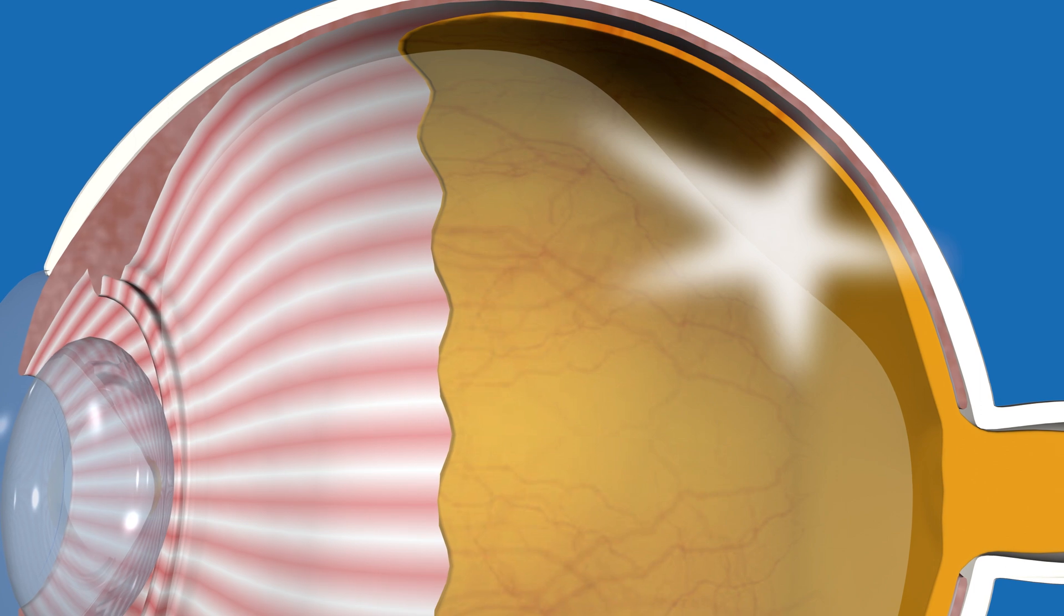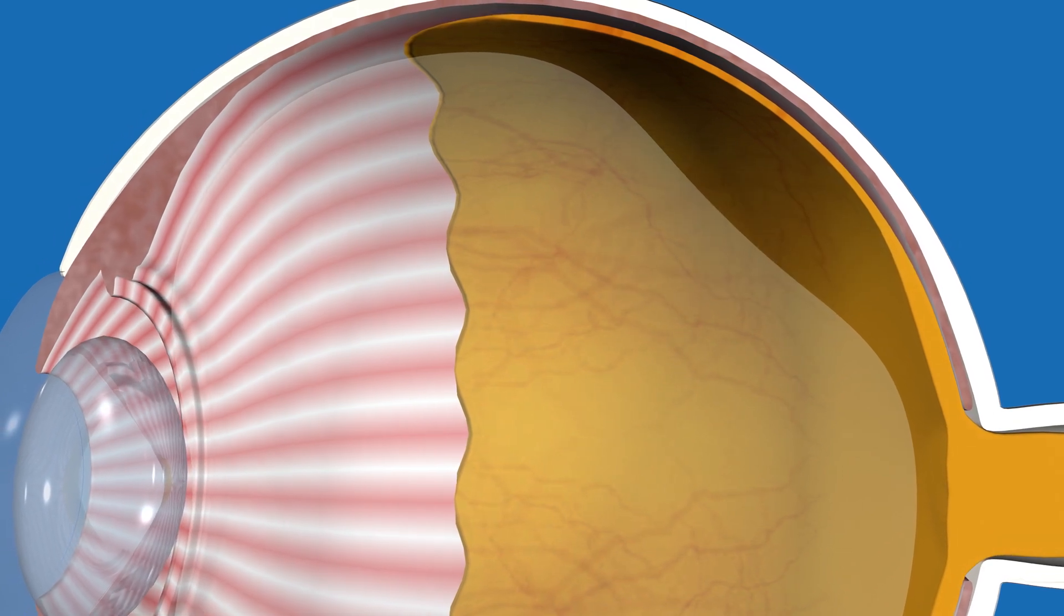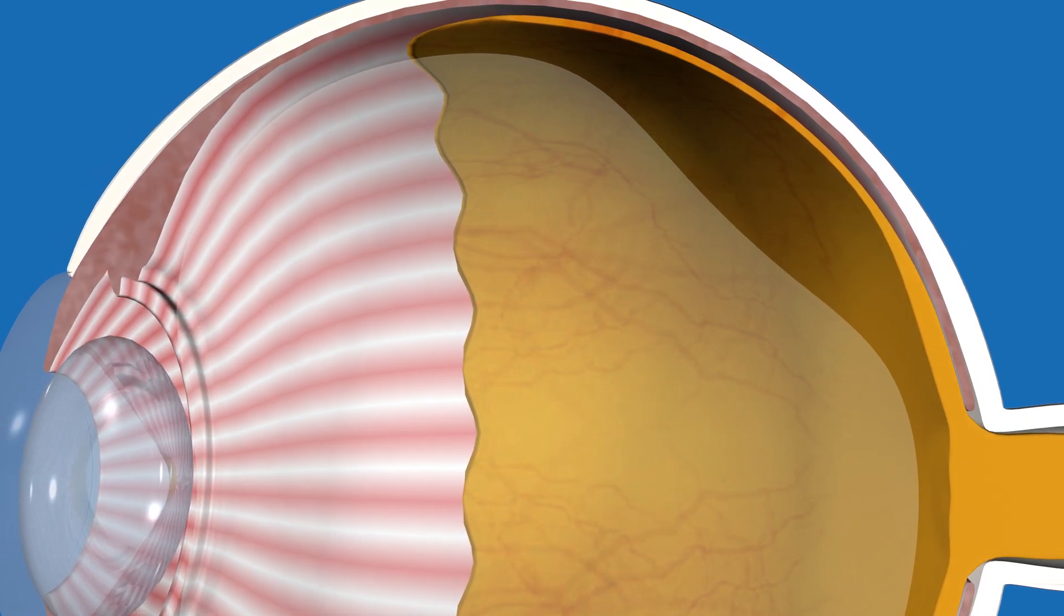As we get older, the vitreous may liquefy. As this happens, the posterior vitreous may tug on the retina.